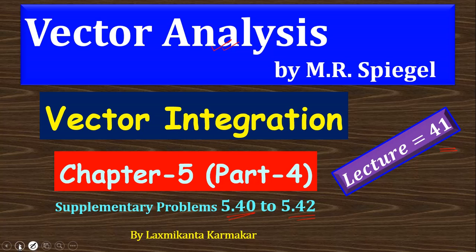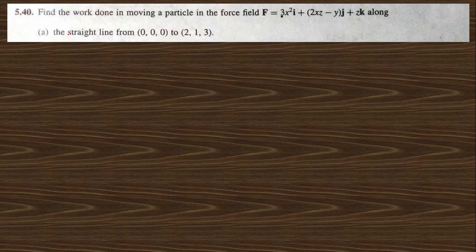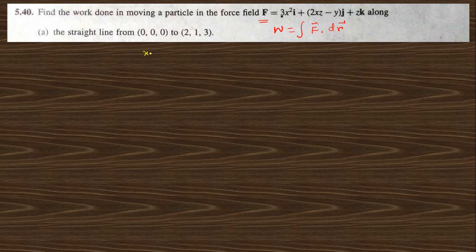Let us start with question 5.40. This says: find the work done in moving a particle with force F equal to the given expression. Work done is nothing but the integration of F dot dr along the path — a straight line from that point to that point. We can take the parametric equations: x equals 2t, y equals t, and z equals 3t.